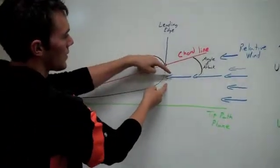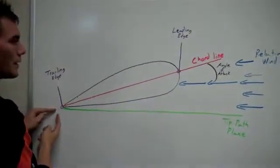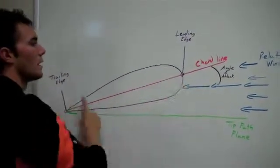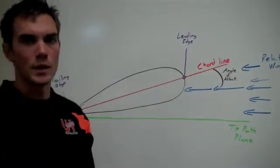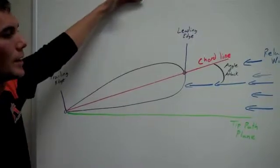When it separates here, this particle has to travel a lot farther to meet up with the same particle on the other side. So it's going to have to speed up. As it speeds up, pressure is going to decrease, creating that vacuum on top, sucking the airfoil up, creating lift.